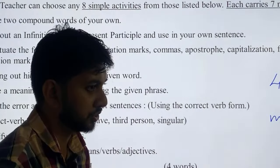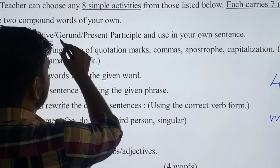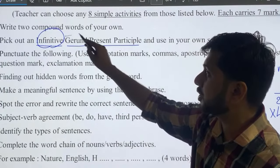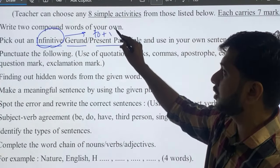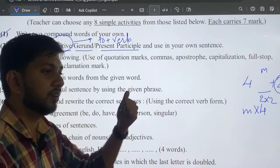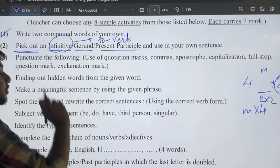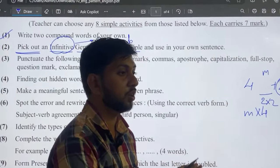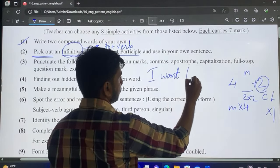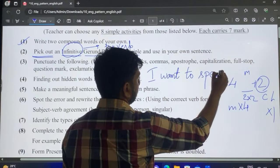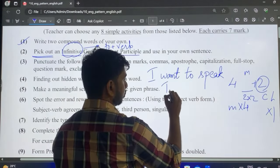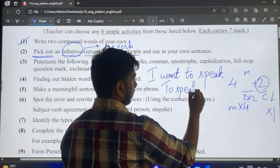The second set of questions requires you to identify an infinitive, gerund, or participle. Mostly you would get an infinitive, which is nothing but 'to' plus a verb. Whenever you have a sentence with 'to' plus a verb, it would be an infinitive. Read the question carefully — it says pick out the infinitive; you do not need to underline it. For example, in 'I want to speak,' the infinitive is 'to speak,' so you would write: 'to speak — infinitive.'